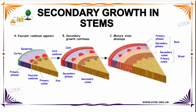The second stage is Secondary Growth Continues. It consists of Cork, Cork Cambium, Secondary Phloem, and Secondary Xylem. The difference is: here is Primary Phloem, but here is Secondary Xylem and Secondary Phloem.